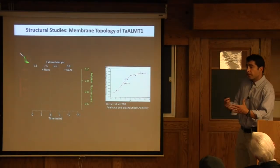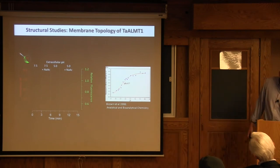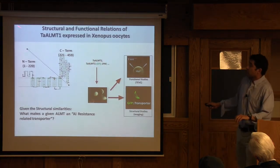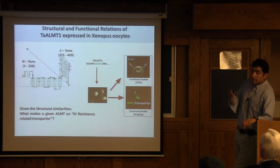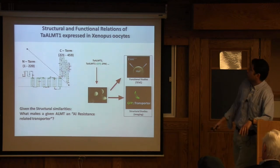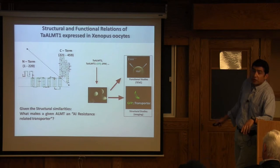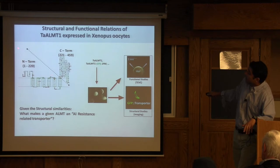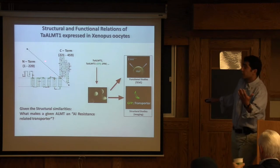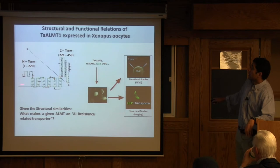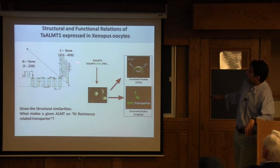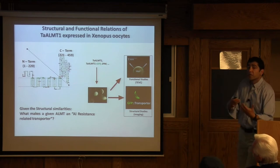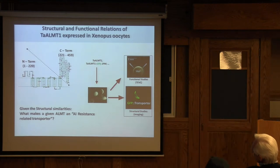Given that this ALMT mediates the release of organic acids upon exposure to aluminum, we first wanted to see what's the interaction of aluminum with the actual transporter. The first step was to determine the topology of the ALMT across the plasma membrane — which side faces the cytosolic side and which side faces the apoplasmic side — in terms of which part of the protein first sees the aluminum and experiences the presence of Al³⁺.